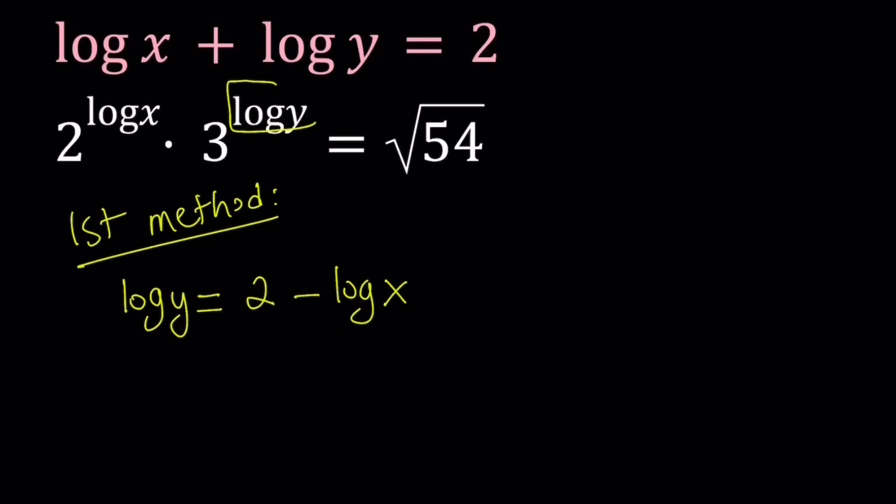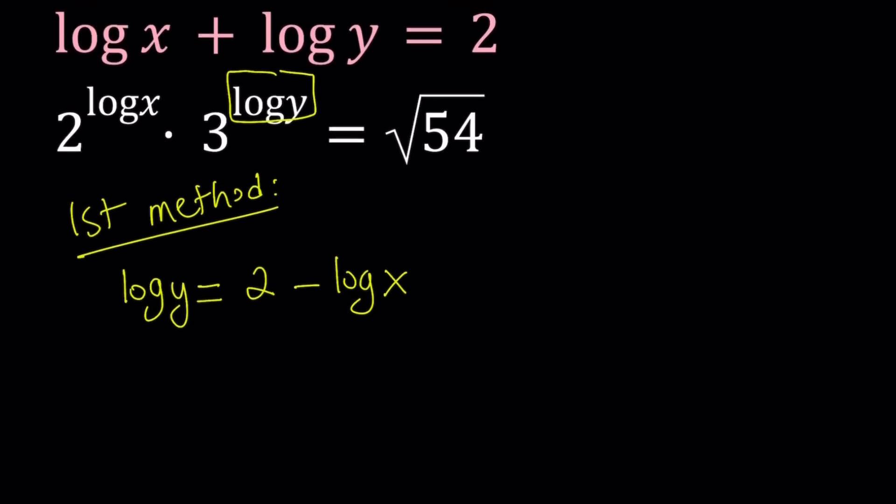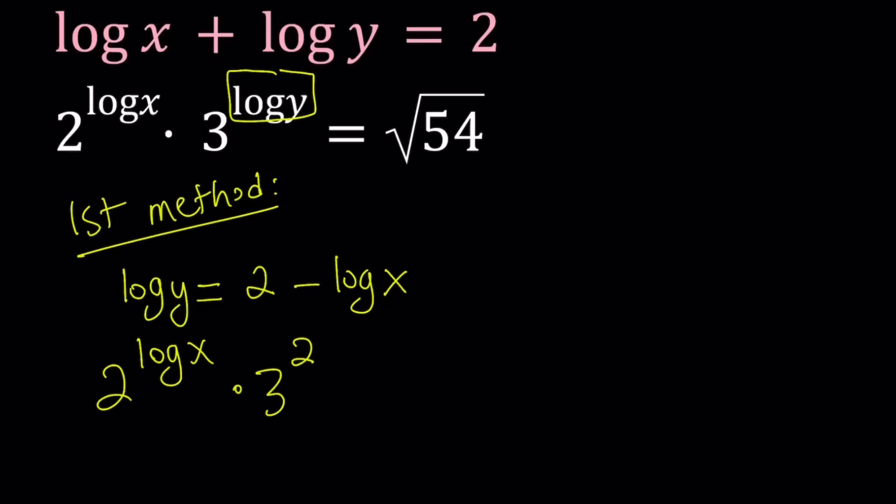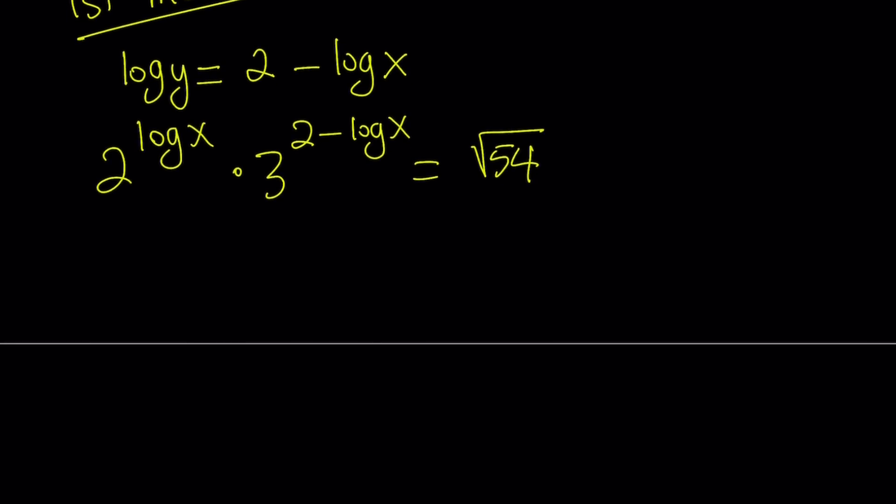Notice that we have 3 to the power log y here, so we're going to replace that with 2 minus log x. So that gives us 2 to the power log x times 3 to the power 2 minus log x equals square root of 54. Let's arrange this a little bit. I can write this as 2 to the power log x times 3 to the second divided by 3 to the power log x. So 3 to the second power can be written as 9, and we can just write this in the denominator because the exponent is negative.